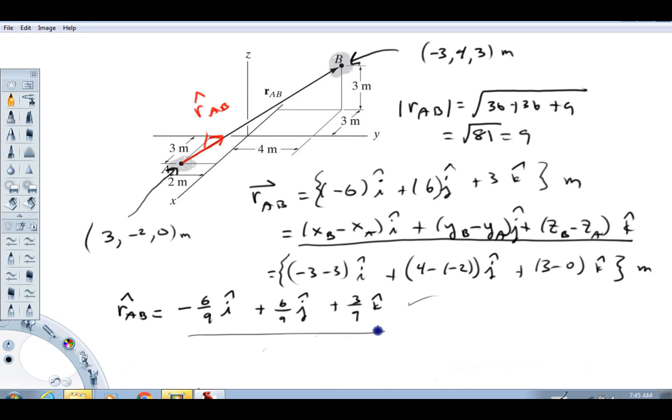And another thing to realize, this thing's dimensionless. It doesn't have any units. That's why I can use it to give other vectors direction. Any other vectors that I know that are parallel to position vector A, B. So hope this video helps demonstrate how to find a displacement vector or a position vector and how to turn that into a unit vector. Have a great day.